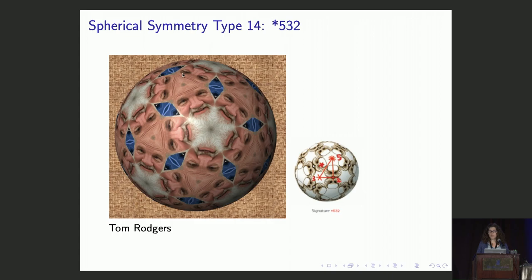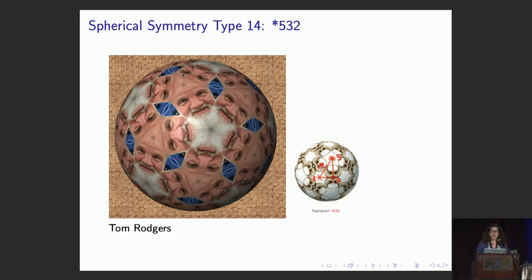So those are all the types of spherical symmetry, and you'll notice that there are 14 kinds. Of course, it's not nearly all of the people in Martin Gardner's sphere of influence, but what better way to honor Martin Gardner and his cohort, and the number 14, than with the spherical symmetry types. Thank you.